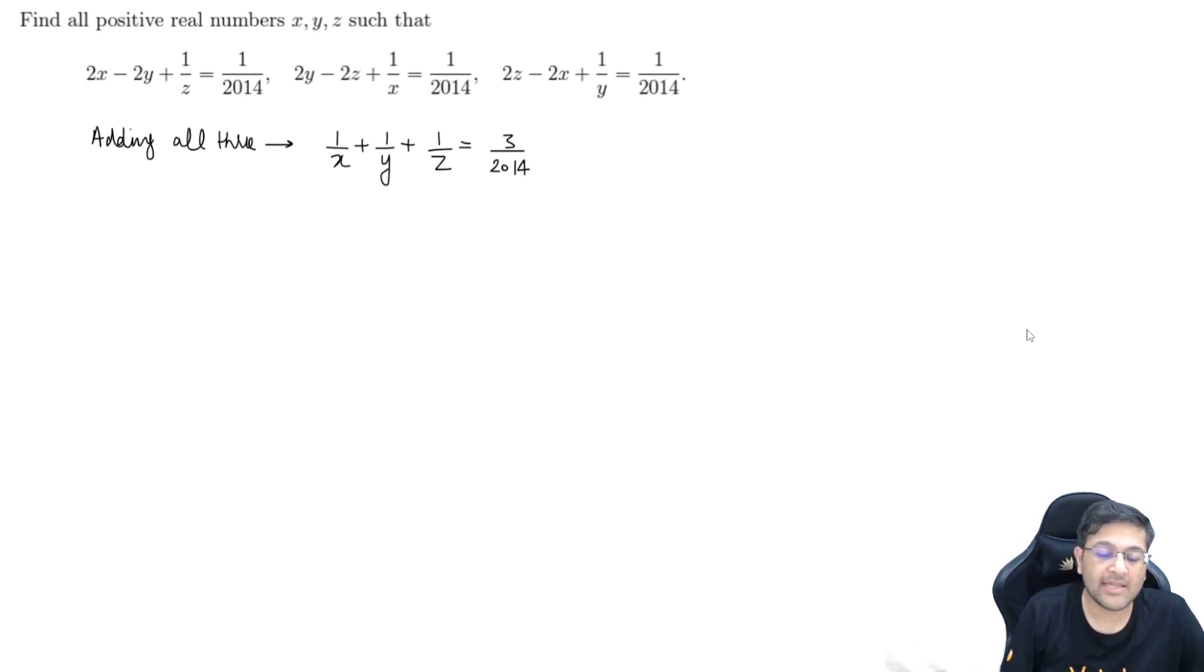Now, guys, what if we would have taken the LCM now. What if for this three equations of three set, I would have taken the LCM. I would be getting 2xz minus 2yz plus 1 is equal to z upon 2014. Right. Second equation will be 2xy minus 2zx plus 1 is equal to x upon 2014. And the third equation is 2yz minus 2xy plus 1 is equal to y upon 2014.